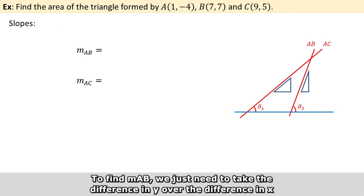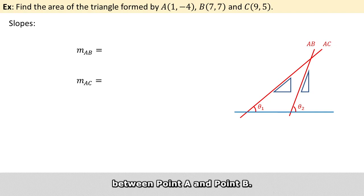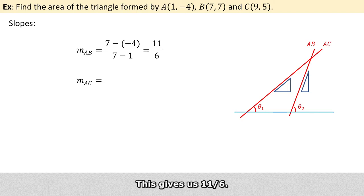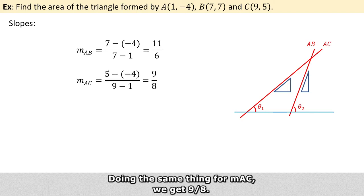To find m_AB, we just need to take the difference in y over the difference in x of point A and point B. This gives us 11 over 6.